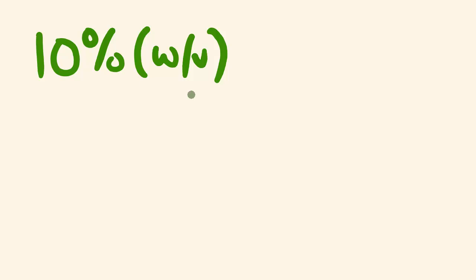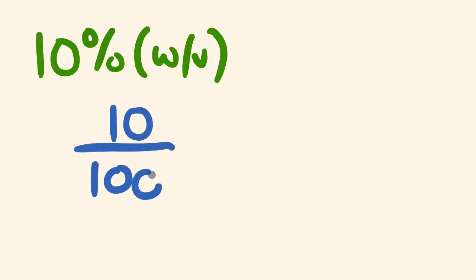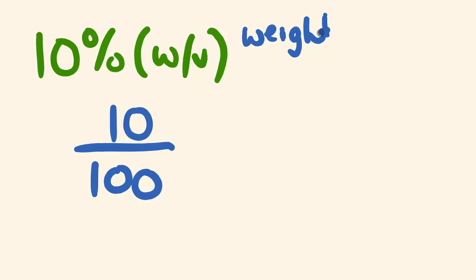First off, what does this mean when you see it? This 10% W/V is fairly simple as long as you break it down. 10% — you're probably well aware — means 10 out of 100. Percentage is out of 100. The W/V part tells us what the 10 and the 100 mean. The W stands for weight, and the weight specifically here is in grams.